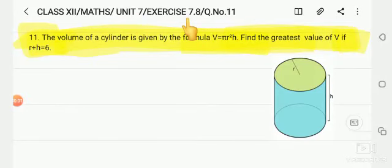Unit 7, Exercise 7.8, Question No. 11. The volume of a cylinder is given by the formula V is equal to pi r square h. Volume of a cylinder formula already given - V stands for volume, r is radius, and h is height.